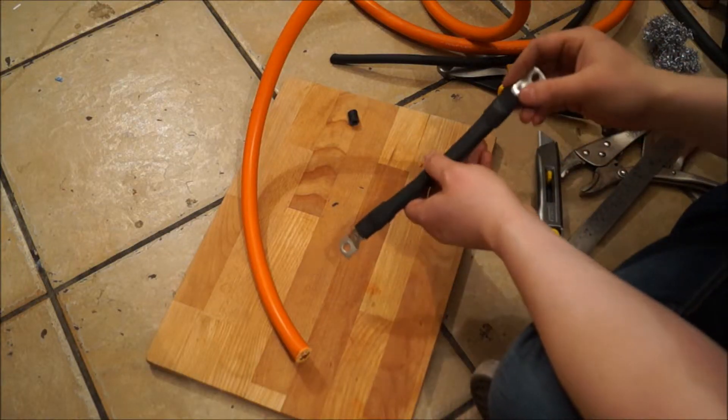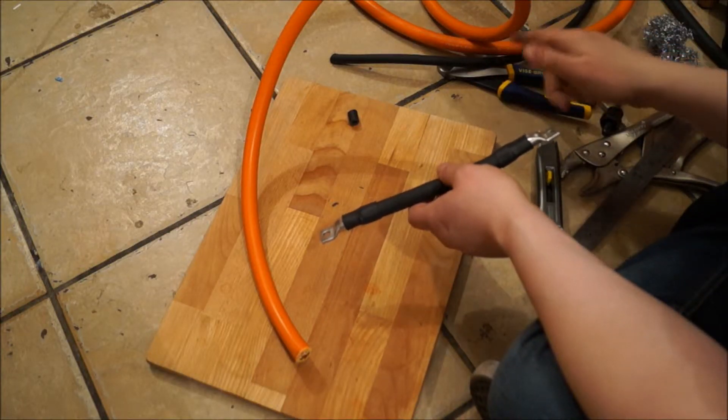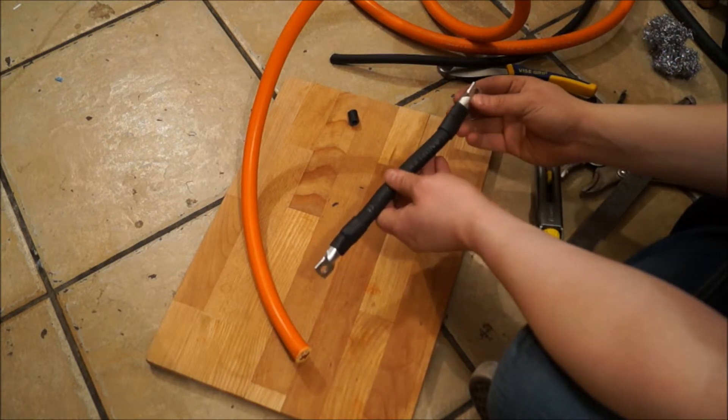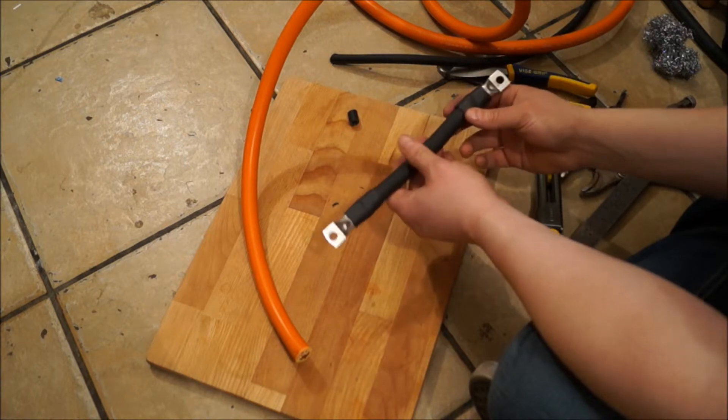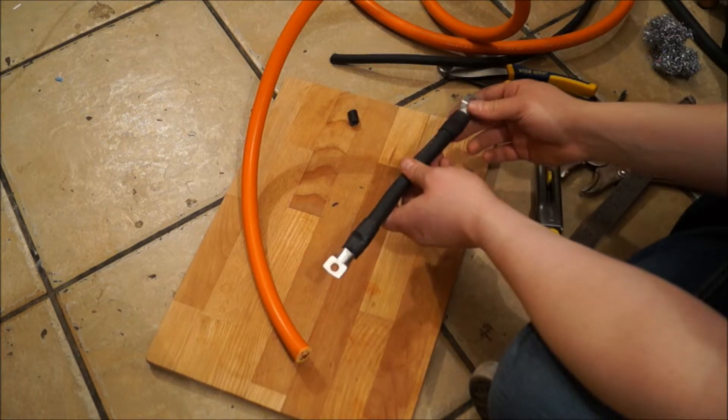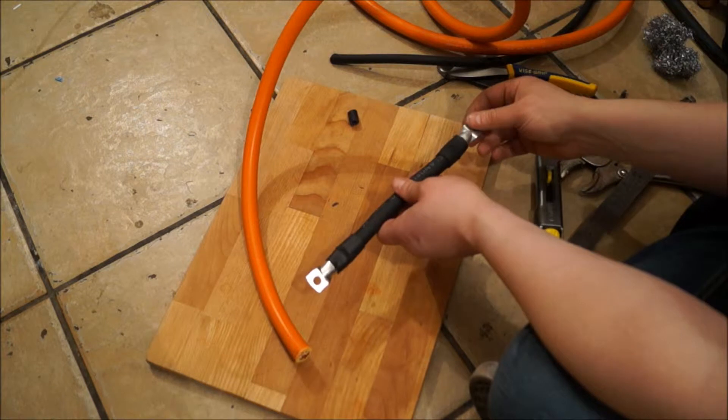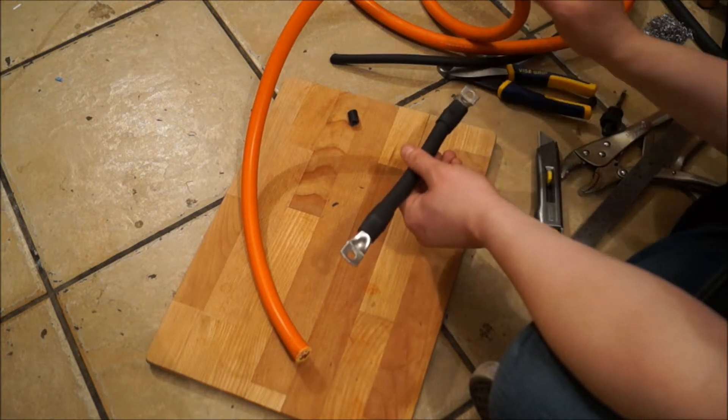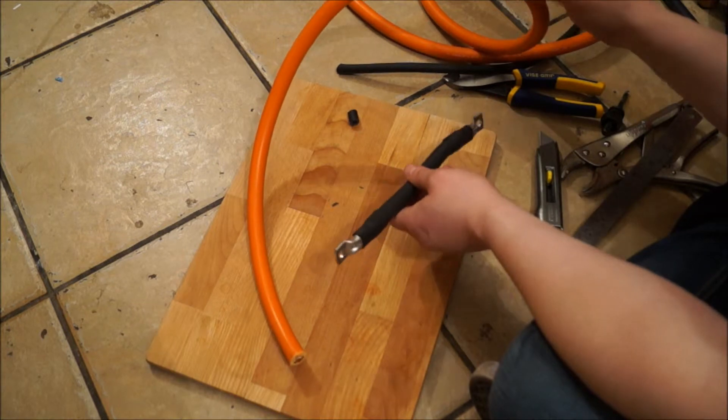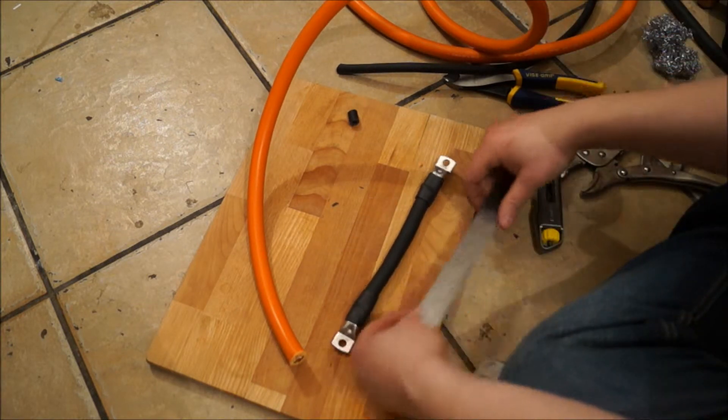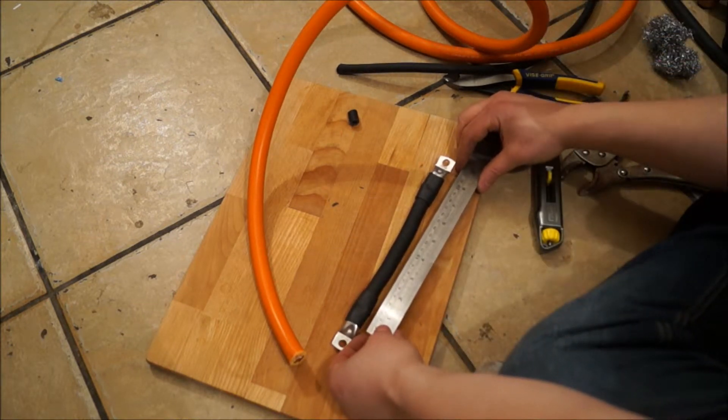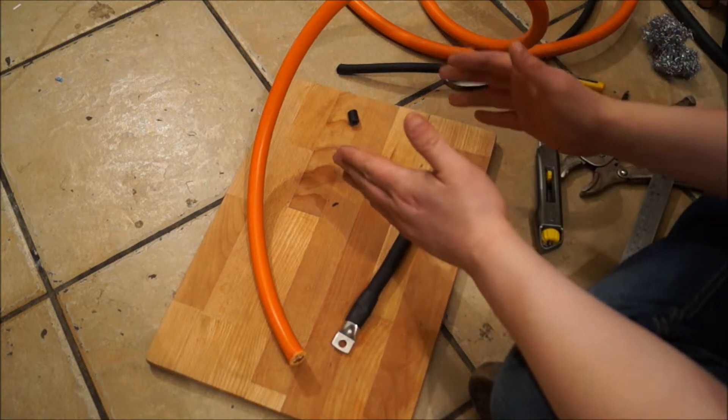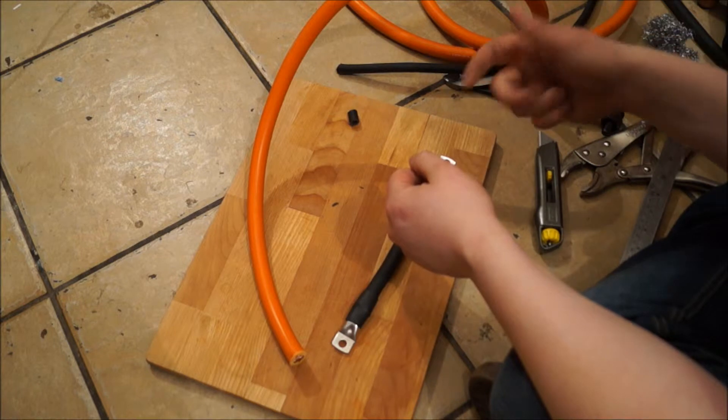Using the same technique I just did with those Anderson connectors and the thinner cable, I'm going to be making quite a number of these short cables to connect the batteries up in parallel. I've got all the negative ones done. I'm going to be doing the positive now with this red orange cable here. These are 20 centimeters long, or about 8 inches.